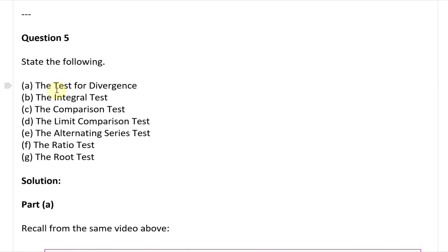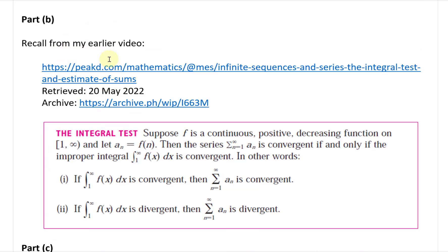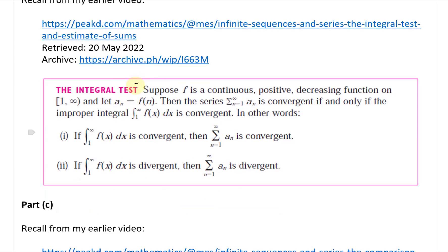Part B is the integral test, from the infinite sequences and series integral test and estimation of sums video. Suppose F is a continuous, positive, decreasing function on the interval from 1 to infinity, and let a_n equal F(n). Then the series summation from n equals 1 to infinity of a_n is convergent if and only if the improper integral from 1 to infinity of F(x) dx is convergent.